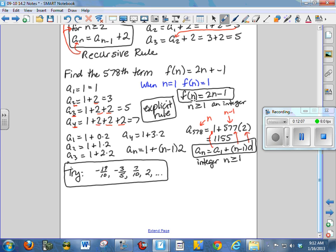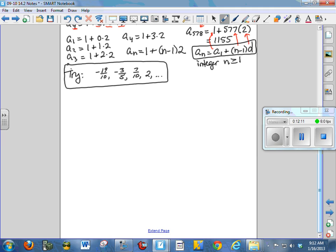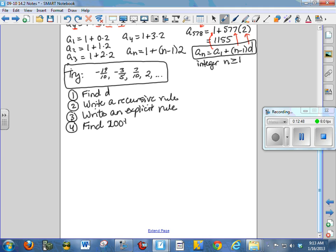Now, I've got a problem for you to try. What I'd like you to do is to: one, find d. Two, write a recursive rule. Three, write an explicit rule. And four, find the 200th term in the sequence. So what I'd like you to do now is to pause the video and to try the problem and then turn it back on and see if you are correct.